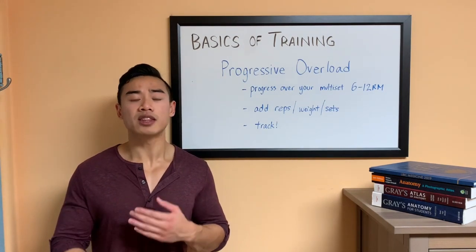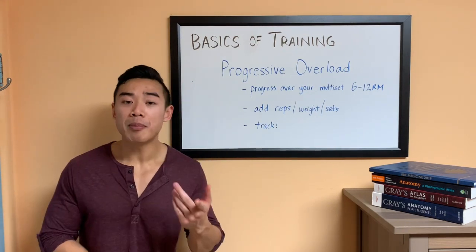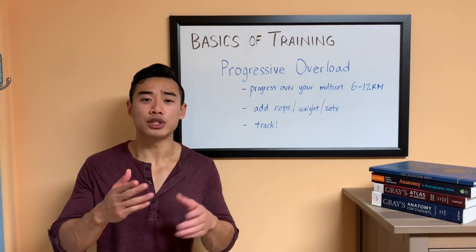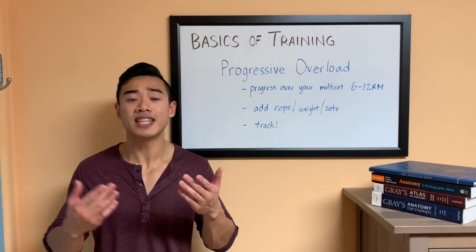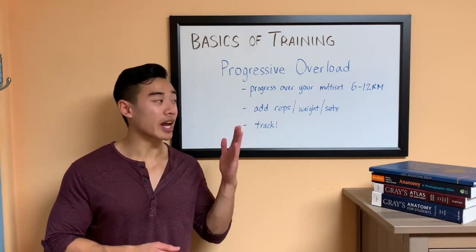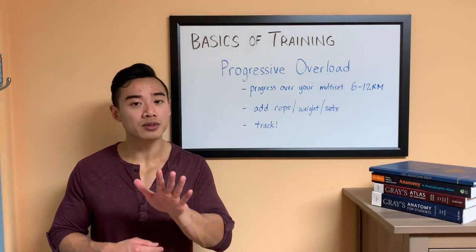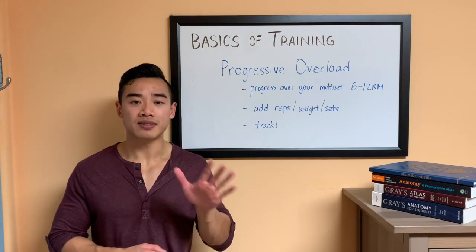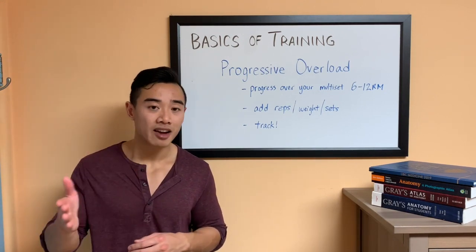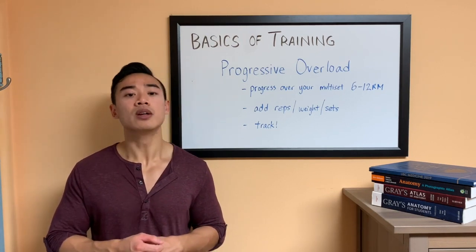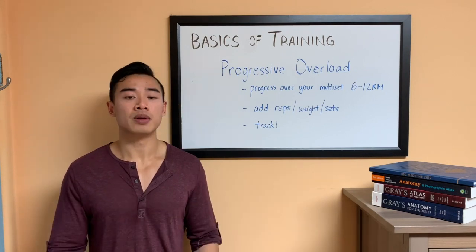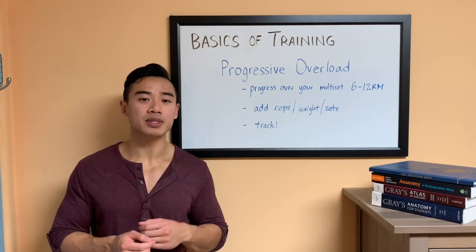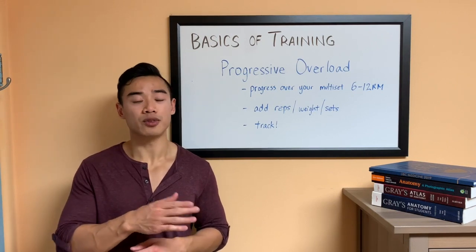How do we apply progressive overload? I think the best way is to strive to add a rep, a little bit of weight, or a set with each workout or as frequently as you can. For example, if you're bench pressing 5 sets of 10 reps at 100 pounds, and the next week you're able to do 11 reps for all 5 sets at 100 pounds, that would be progressive overload. Similarly, doing 5 sets of 10 reps with 105 pounds is also progressive overload. Both of those are probably indicating that you're gaining muscle. You should also be seeing progressive overload across all of your exercises, not just your bench press.